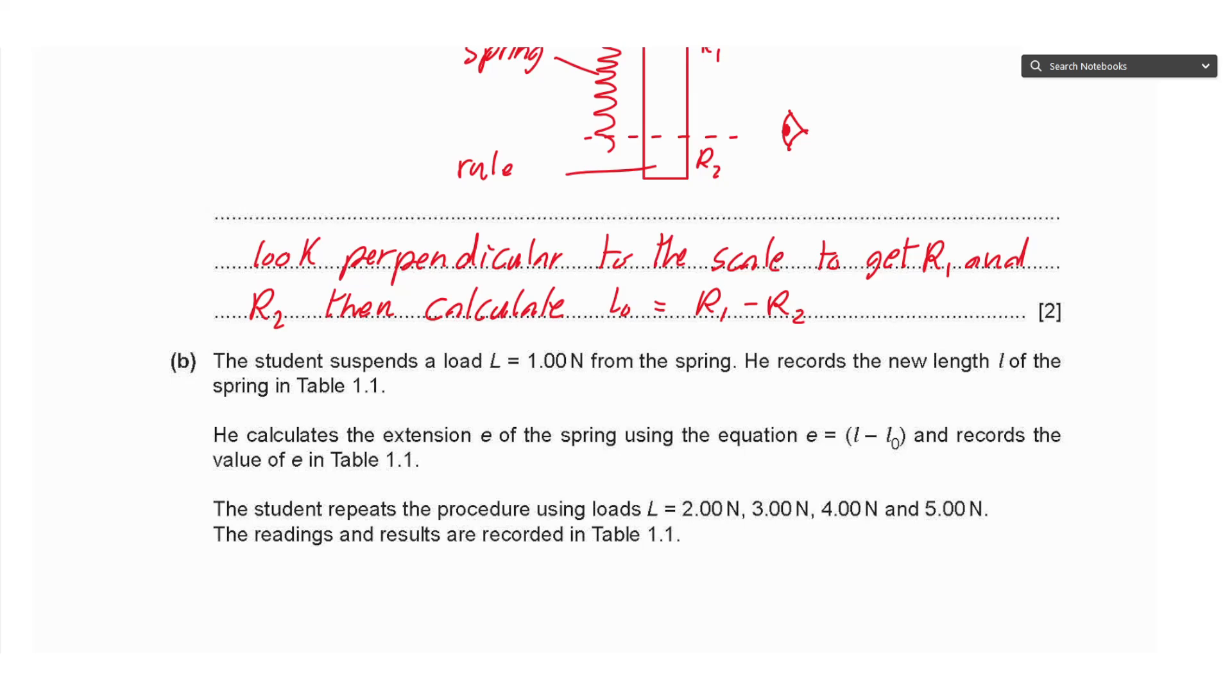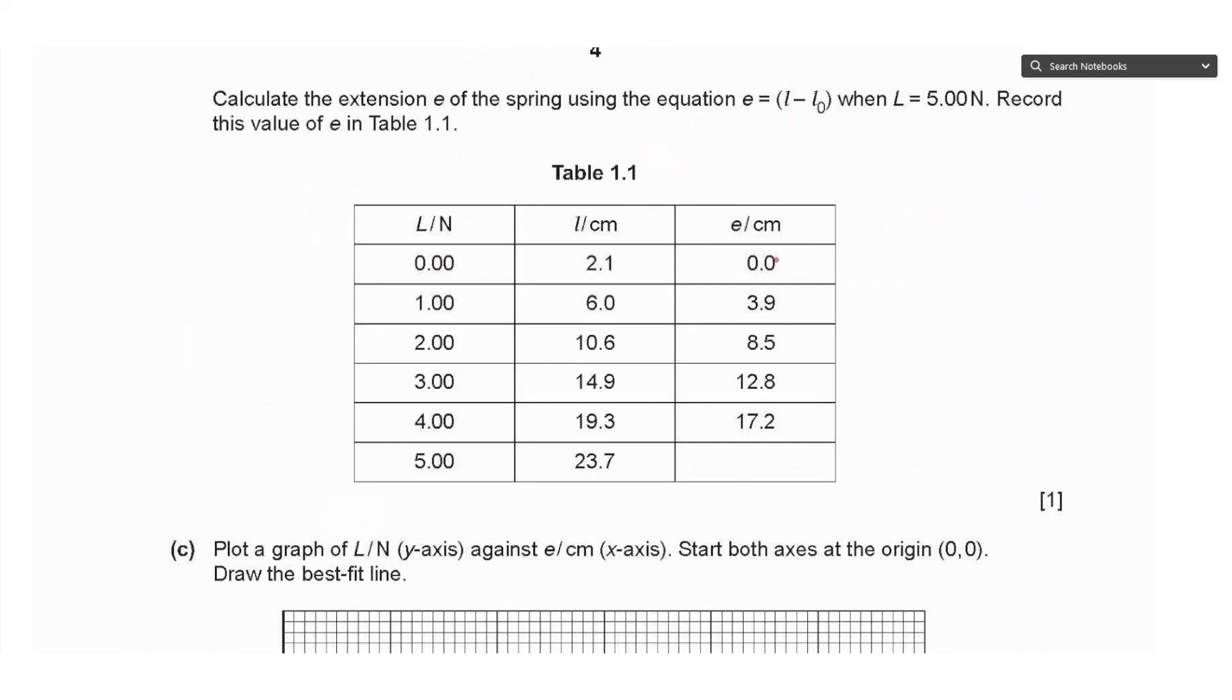Part B says the student suspends a load L equals 1.00 Newton from the spring. He records the new length l of the spring in Table 1.1. He calculates the extension e of the spring using the equation e equals l minus L₀ and records the value. The student repeats the procedure using loads of 2, 3, 4, 5.00 Newtons. Calculate the extension e when l equals 5 Newtons. So this is L₀ when the load is equal to zero.